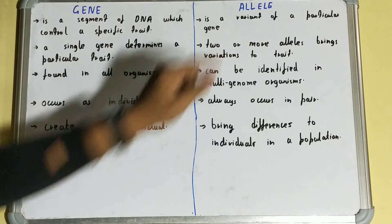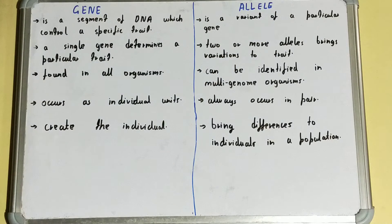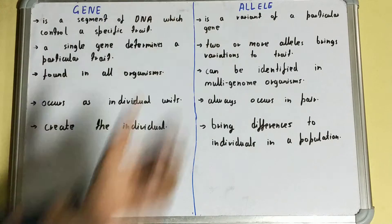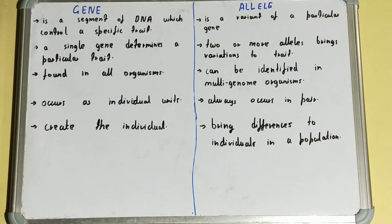variant of a particular gene. For example, there is a gene or a characteristic of a particular individual, but that same characteristic will be different in different individuals. So that is what an allele is — allele is basically the variant of a gene, or you can say the variant of a particular trait.